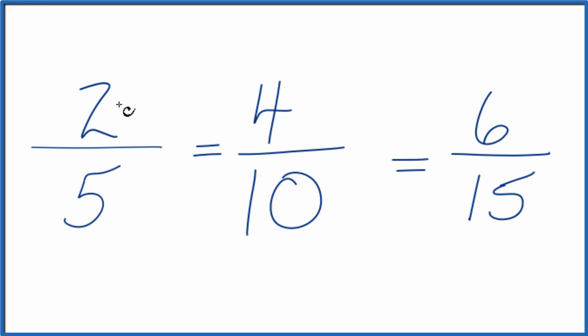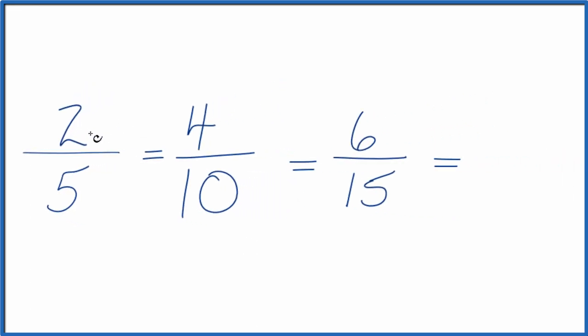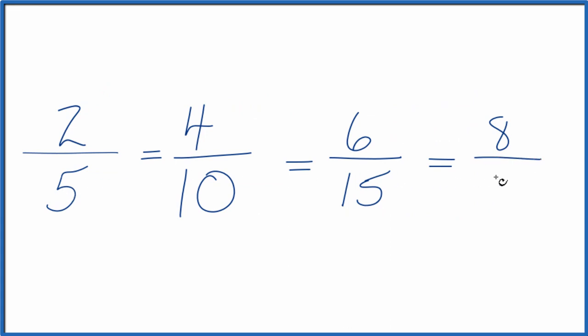Let's do one more. We could multiply by 4. 2 times 4 is 8, 5 times 4 is 20. And 8 over 20, that's another equivalent ratio for two-fifths.